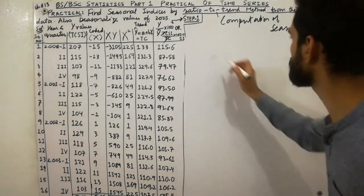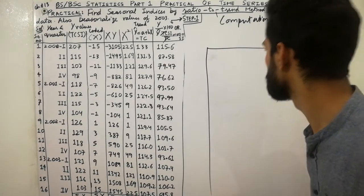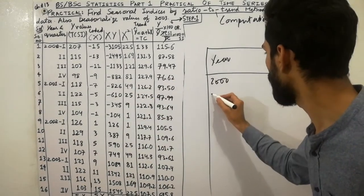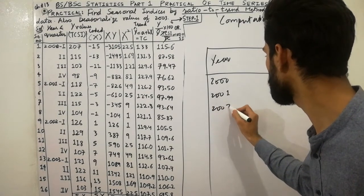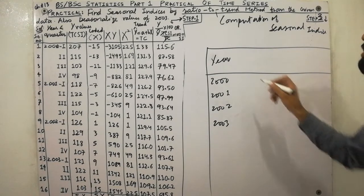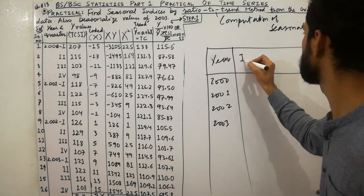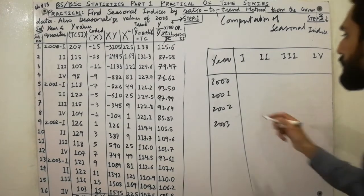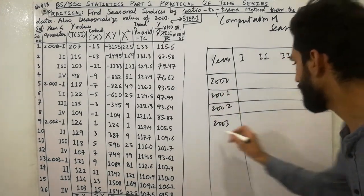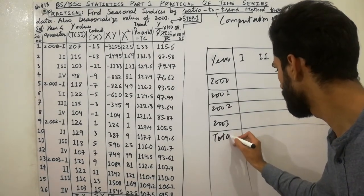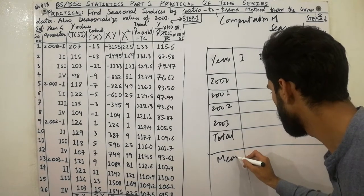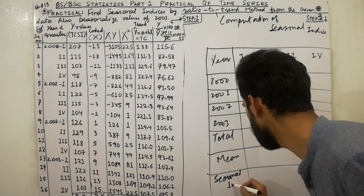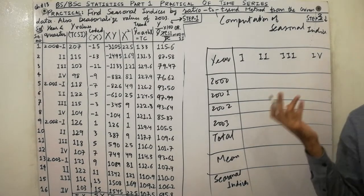In step three, we compute the seasonal indices. Set up a table with years 2000, 2001, 2002, and 2003 as rows. The columns represent the quarters: first, second, third, and fourth quarter. Additional columns will be for total, mean, and seasonal indices.